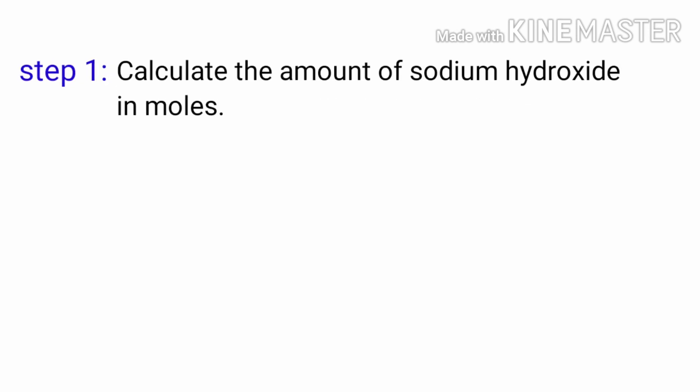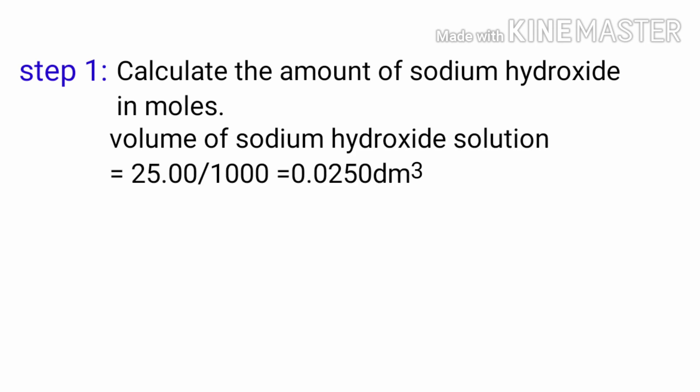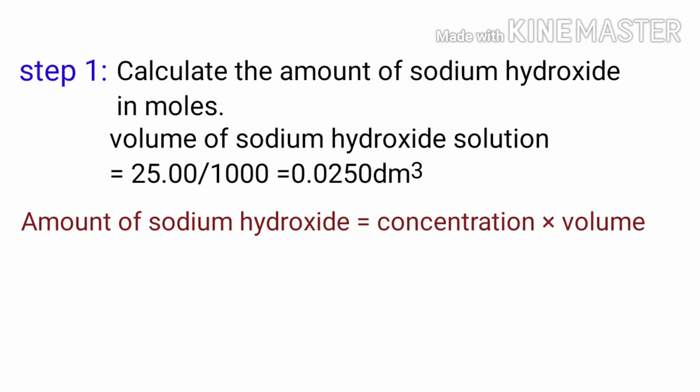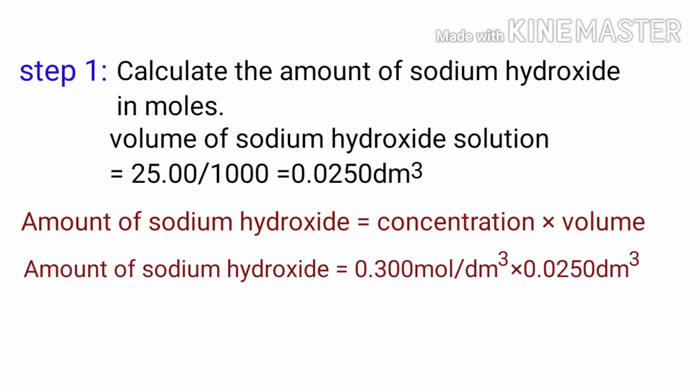Step 1: Calculate the amount of sodium hydroxide in moles. First, convert the volume of sodium hydroxide solution from cm³ to dm³. Volume of NaOH solution = 25.0 ÷ 1000 = 0.0250 dm³. Amount of NaOH = concentration × volume = 0.300 mol/dm³ × 0.0250 dm³ = 0.00750 mol.